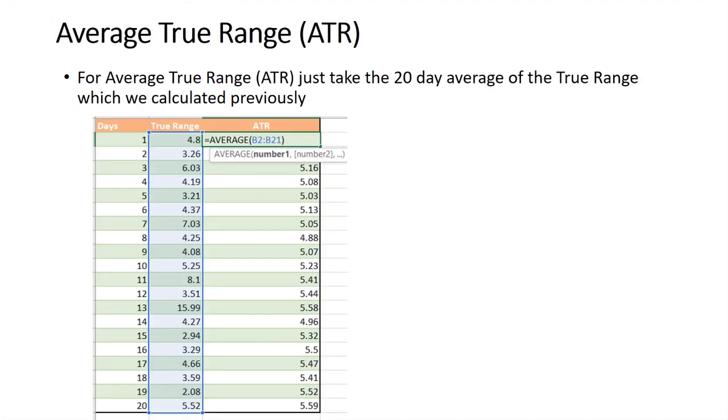So that's true range. How do you get to the average true range? It's simple — you just take the 20-day average of those true range numbers.